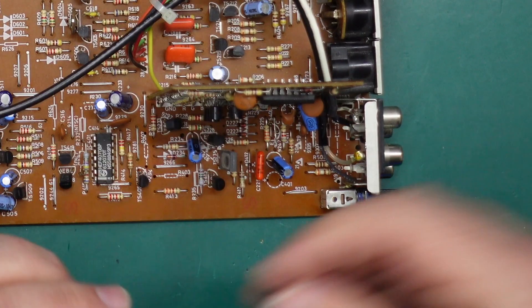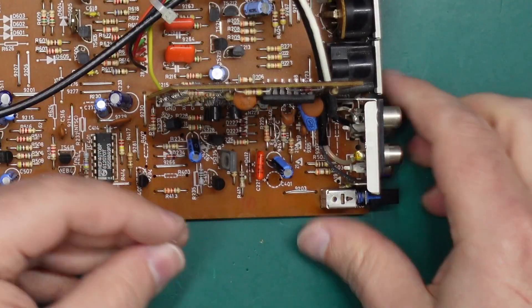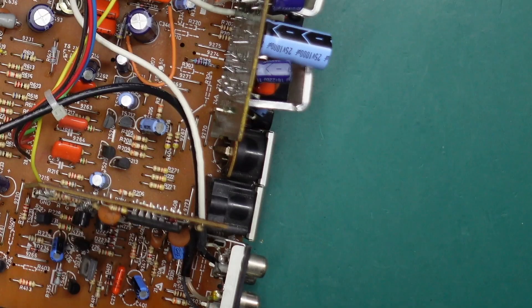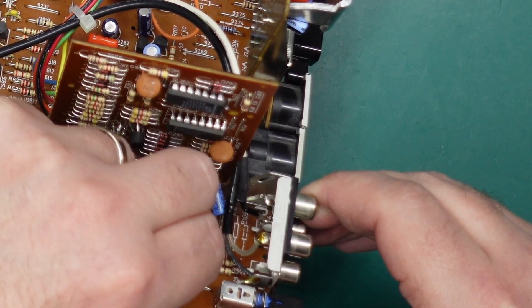We need to install our 2.2 microfarad capacitor at C401. I'm just using a 2.2 microfarad 50 volt, it doesn't really matter on the voltage as long as it's over 16 and of course make sure you get the polarity correct it is marked on the silkscreen on the board.